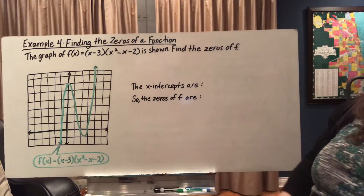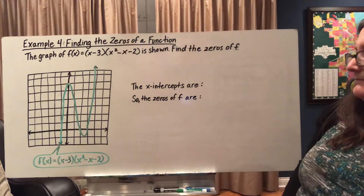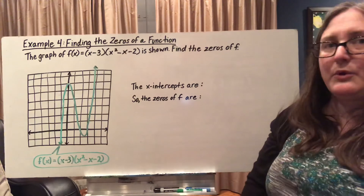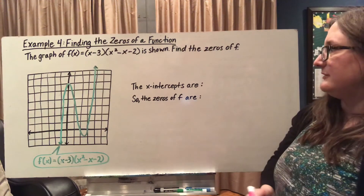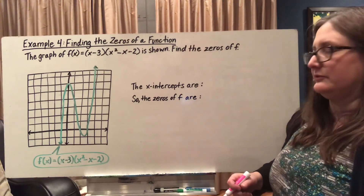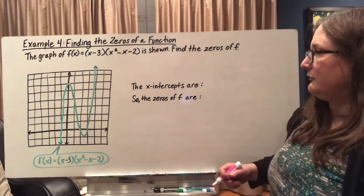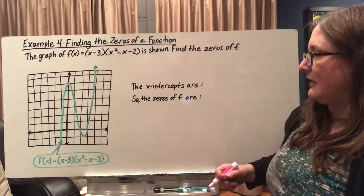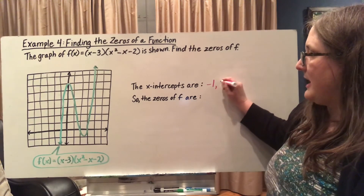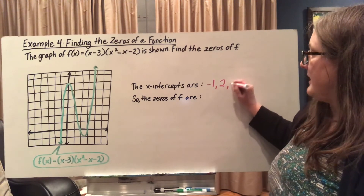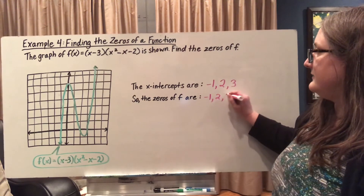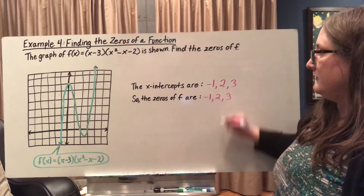If we take a look at this function and we're asked to find the zeros of this function, we're really being asked to find the x-intercepts, where we get an output of 0 — so (some number, 0). Our x-intercepts here are at -1, 2, and 3. These are also my zeros for the function.